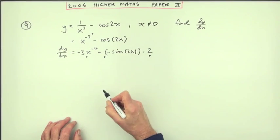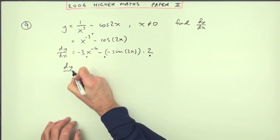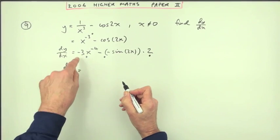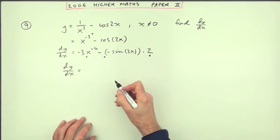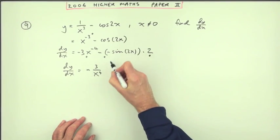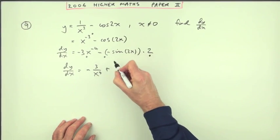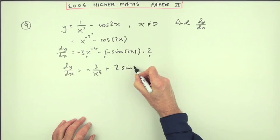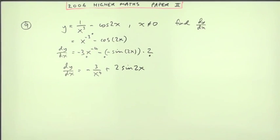If I'd written plus, that would have been the mark there, but I'm just going to tidy it all up anyway. So that means you've got negative 3 over x to the power 4, and that means you've got plus, and it'll be 2 times the sine of 2x, all tidied up.